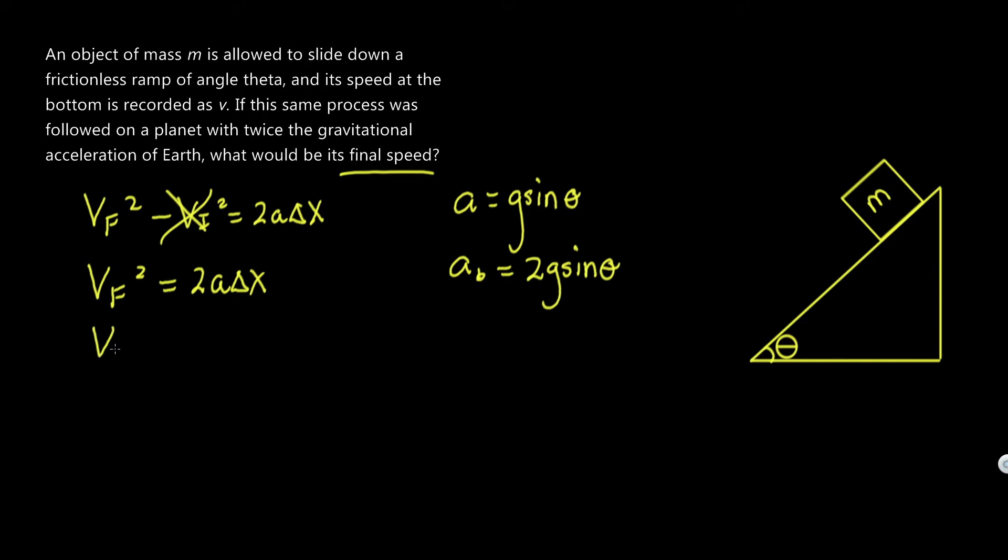So again, let's substitute that in. So v final squared equals 2 times 2g sine theta times delta x. And now all we have to do is take the square root to find v final, and that equals rad 4, because you know these 2's multiply, g sine theta delta x.